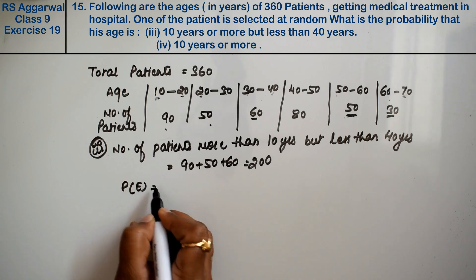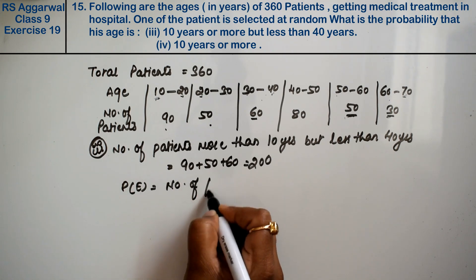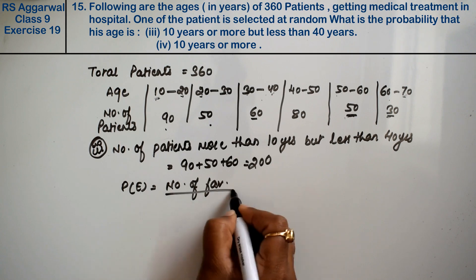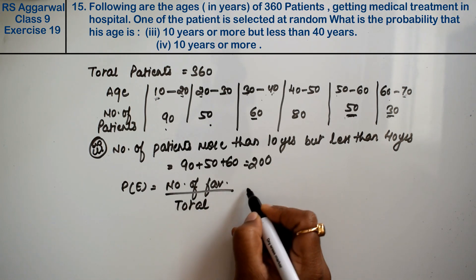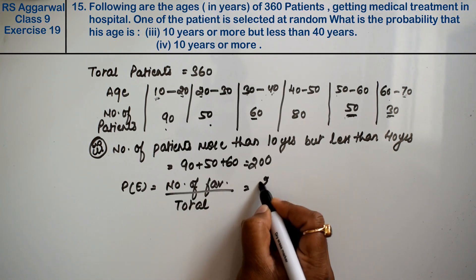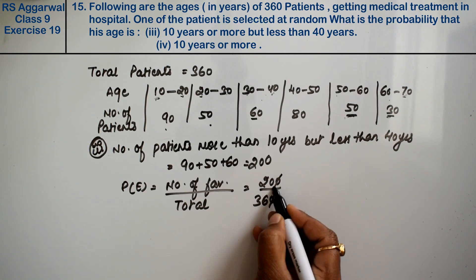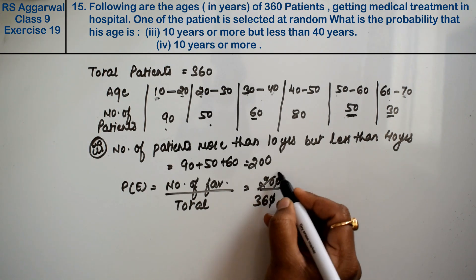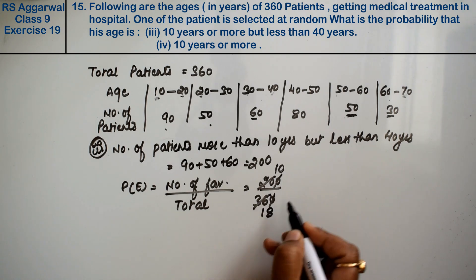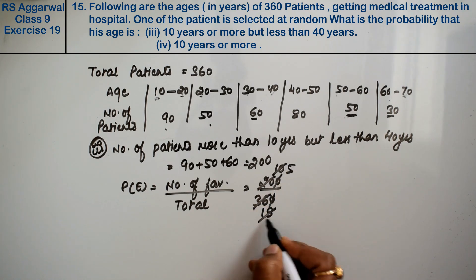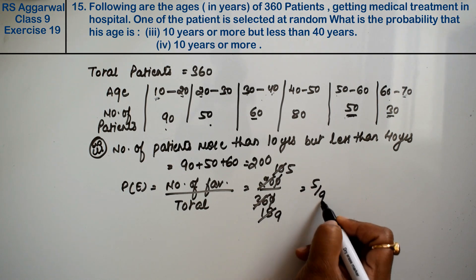Probability equals number of favourable divided by total, which is 200 divided by 360. Simplifying: 5 upon 9 is the answer.